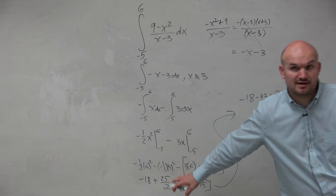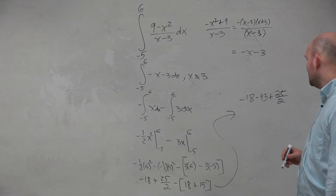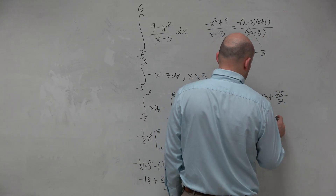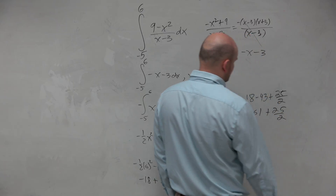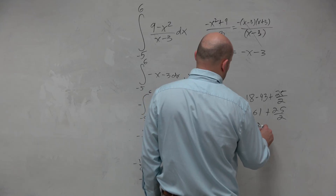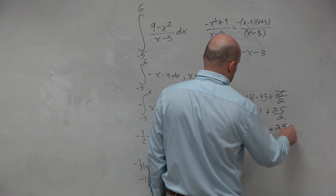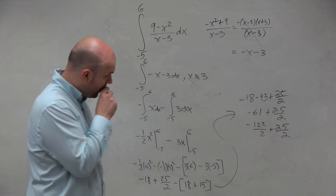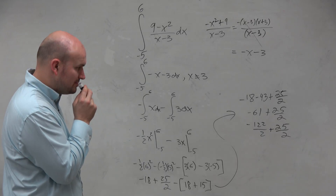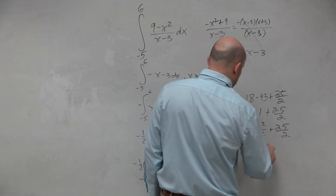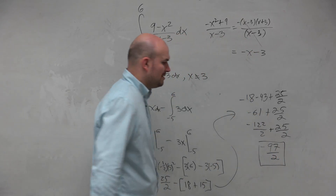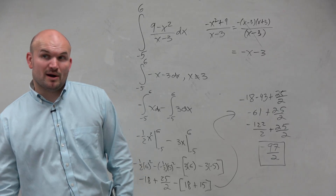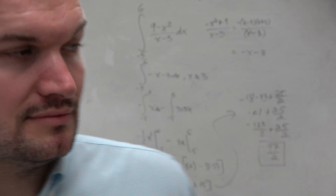If this was a free response, we could just leave it as is. But I'll have a little fun with my fractions. That is going to give me negative 97 over 2. Check my math, but I think I got that all correct. So a rather simple problem, but you guys can see...